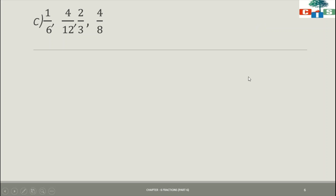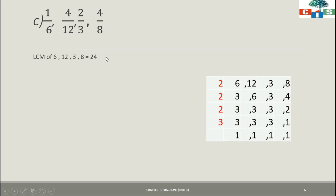Now we will see one more sum of question number 4, that is sum number C. We have to arrange this set of fractions in ascending order — ascending means smallest to biggest. The fractions are 1/6, 4/12, 2/3, and 4/8. Here we can see that the numerators and denominators are not the same, so we have to convert this set into like fractions. To do so, we find the LCM of the denominators: 6, 12, 3, and 8. The LCM is 24.